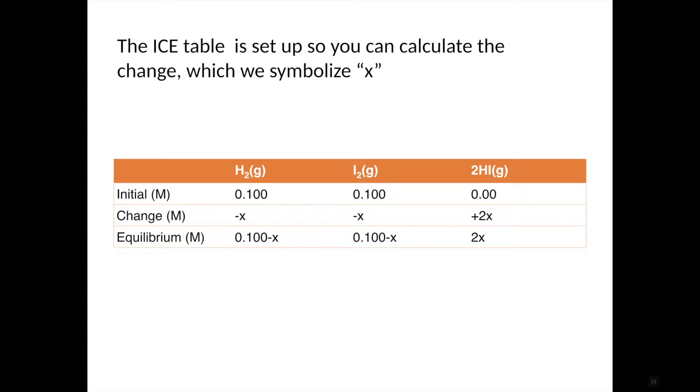This is an ICE table, and you would set up the changes to be X. Because H2 and I2 are reactants, they are starting with the complete concentration, and then they decrease. So there is a decrease of some unknown amount, X. In the case of HI, it is increasing by the same amount of X, but because there's two of them, it's 2X. So these are the equilibrium concentrations as you see them.